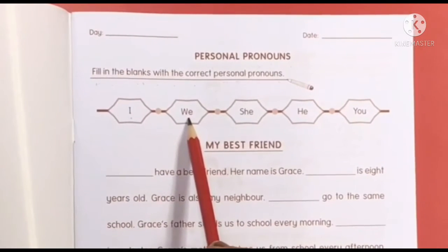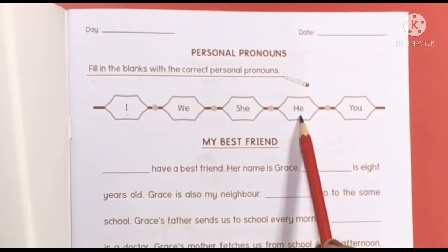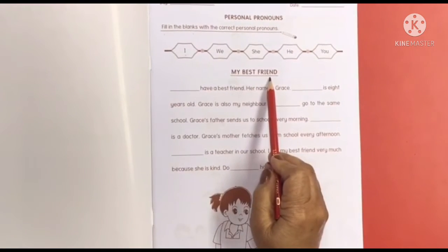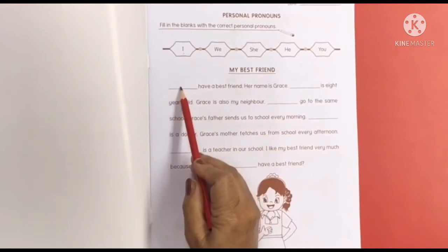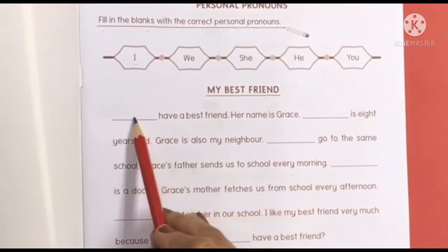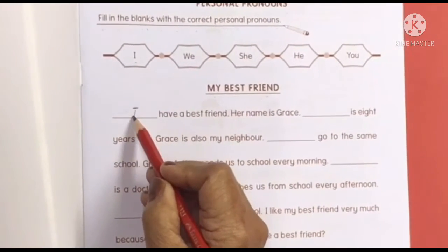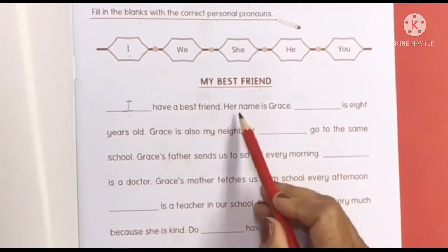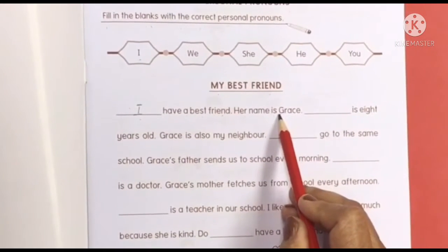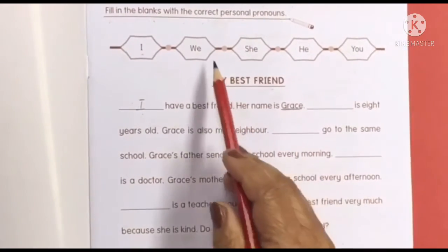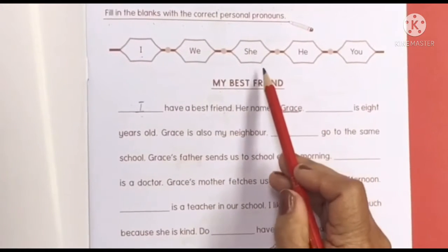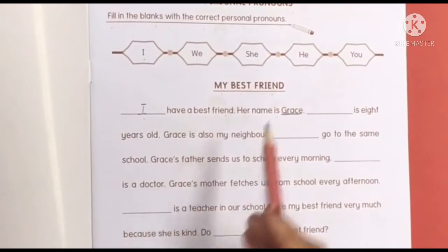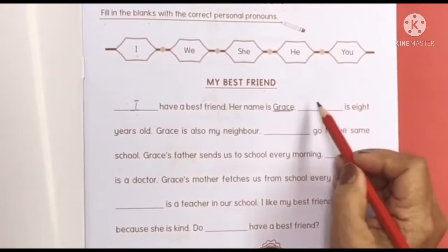The word choices are: I, We, She, He, You. This passage is about my best friend. To start, the first personal pronoun you have to write is 'I.' 'I have a best friend. Her name is Grace.' Now, Grace is a girl. So which personal pronoun should I use — she or he? 'She!' Good, because the personal pronoun for girl is 'she.'